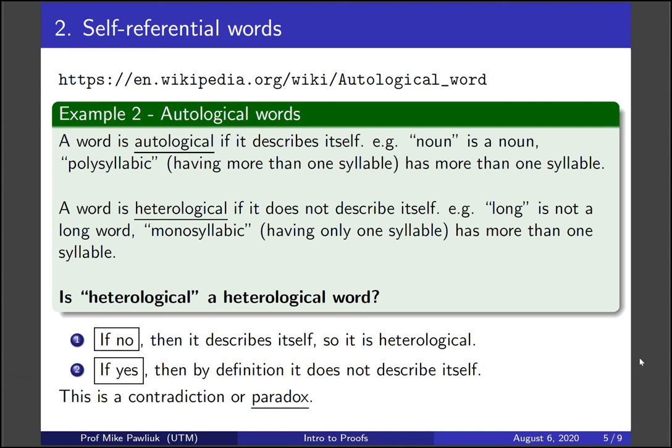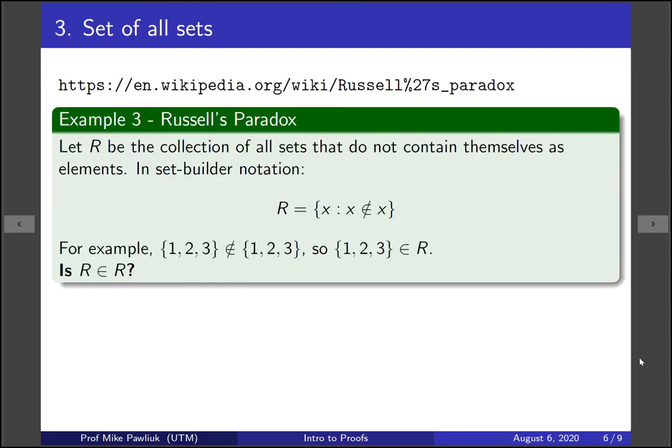Let's look at another example — this is called Russell's paradox. Russell was a mathematician and philosopher in the early 20th century. Let R be the collection of all sets that do not contain themselves as elements.